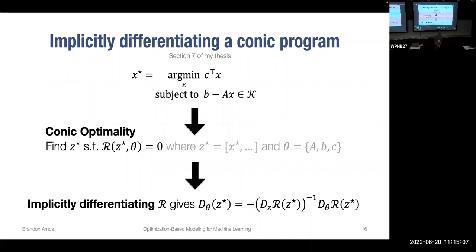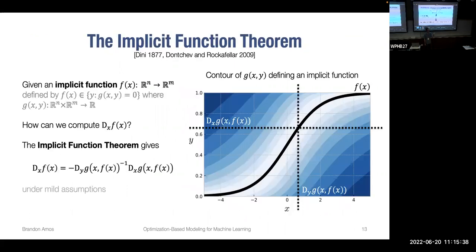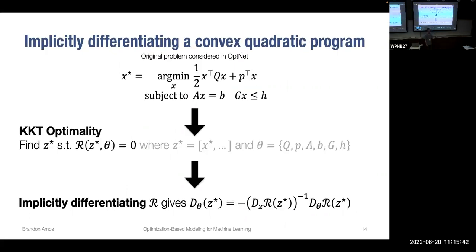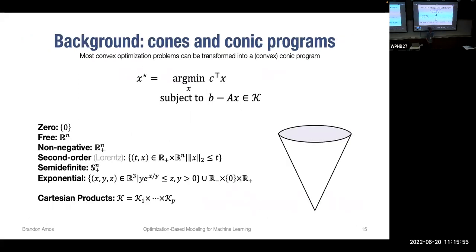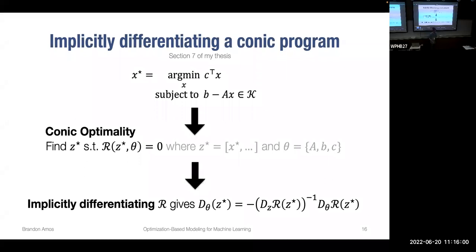On whether converting between formulations gives similar gradients: in theory they should be equivalent, but in practice they may differ — especially because conic programs with linear objectives may only be sub-differentiable. The quadratic program case uses an existing pre-factorized KKT matrix from the forward pass (direct solver), whereas the conic case may use iterative solvers like LSQR, which can result in very different gradients.